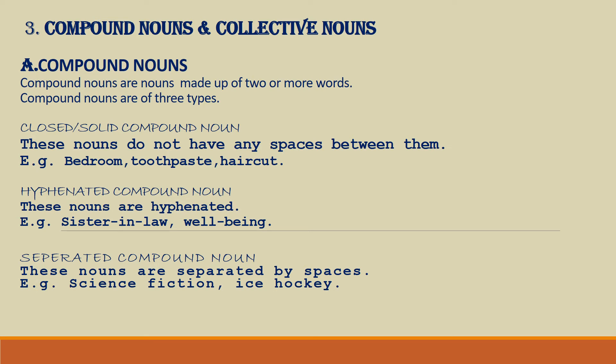Compound nouns and collective nouns. Compound nouns are nouns made up of two or more words. Compound nouns are of three types. Closed or solid compound nouns — these nouns do not have any spaces between them. For example, bedroom, toothpaste, haircut. Note that these words are made up of two separate words that come together to form one single word.